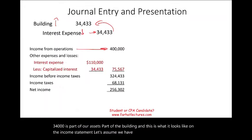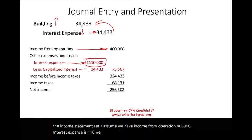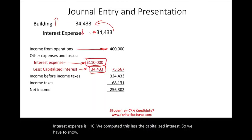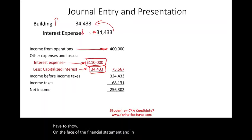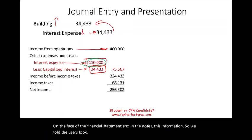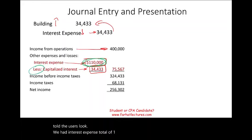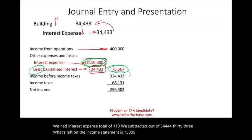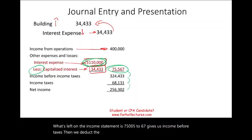On the income statement, assume income from operations is $400,000. Total interest expense is $110,000, less the capitalized interest of $34,443, leaving $75,557 on the income statement. You must show on the face of the financial statements and in the notes this information — disclosing total interest of $110,000 with the capitalized portion subtracted out — giving income before taxes, then deducting taxes to arrive at net income.